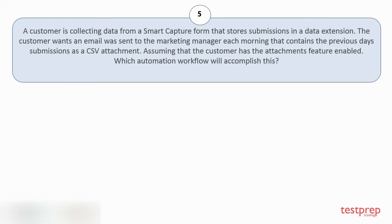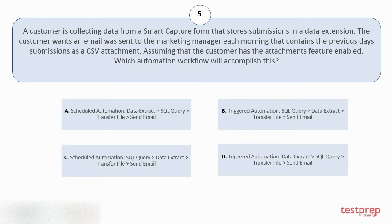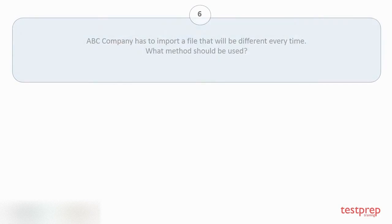Question number five: A customer is collecting data from a Smart Capture form that stores submissions in a data extension. The customer wants an email sent to the marketing manager each morning that contains the previous day's submissions as a CSV attachment. Assuming that the customer has the attachments feature enabled, which automation workflow will accomplish this? Your options are shown on screen. The correct answer is option C.